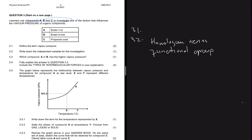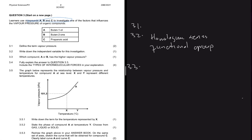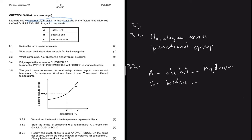Question 3.3 asks which compound, A or B, has the higher vapor pressure. Compound A ends with '-ol' so it is an alcohol, and compound B ends with '-one' so it is a ketone. Alcohol has hydrogen bonding, while a ketone has dipole-dipole forces. Hydrogen bonding is stronger than dipole-dipole forces.